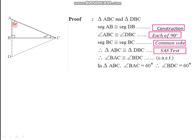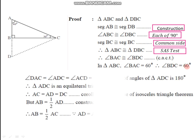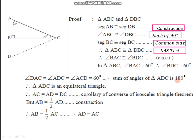The measure of angle A is given to be 60 degrees. So if the measure of angle BAC is 60 degrees, the measure of angle BDC is also 60 degrees. Now for triangle ADC, the measure of angle A is 60 degrees and the measure of angle D is also 60 degrees. Therefore the measure of the remaining angle C must also be 60 degrees, since the sum of all angles of a triangle is 180 degrees.